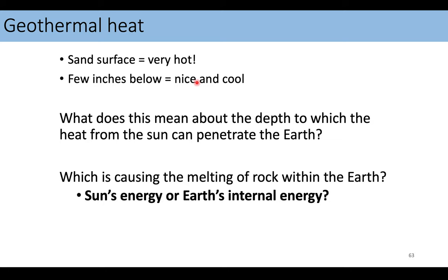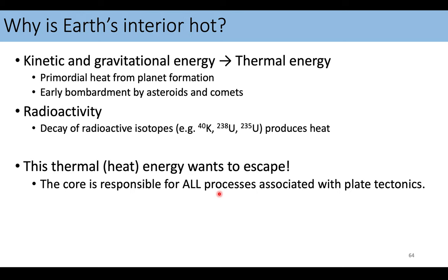So that leads us to the next question: what is causing the melting of the rock within earth — the sun's energy or earth's internal energy? We know that the heat from the sun can't penetrate very far into the crust, more than an inch or two. So any melting of rock within earth cannot be caused by the sun. It's actually caused by energy that's already within the center of the earth — earth's internal energy is causing any sort of melting that occurs within earth.